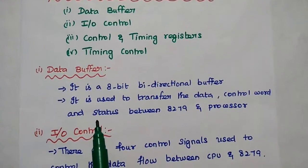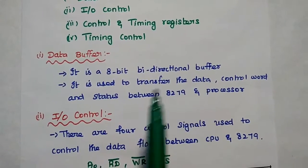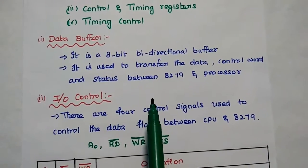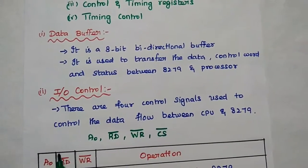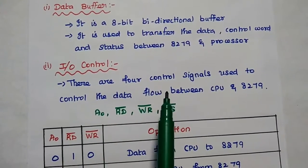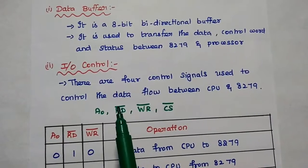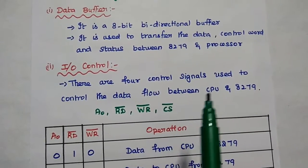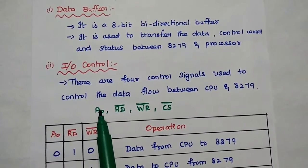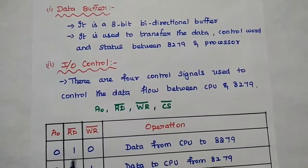The data buffer is an 8-bit bidirectional buffer used to transfer data, command word, control word, and status information between the processor and 8279. Then the input-output control — there are 4 control signals from the processor used to control the data flow between the processor and 8279.